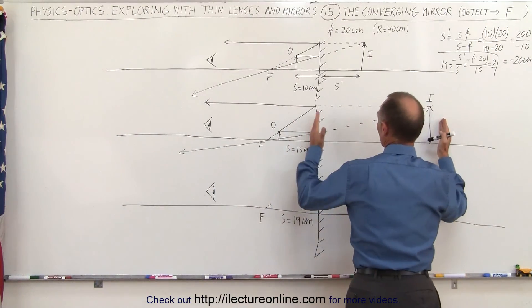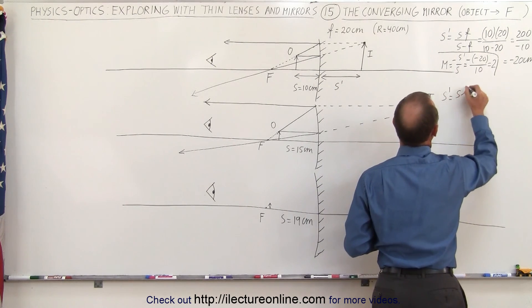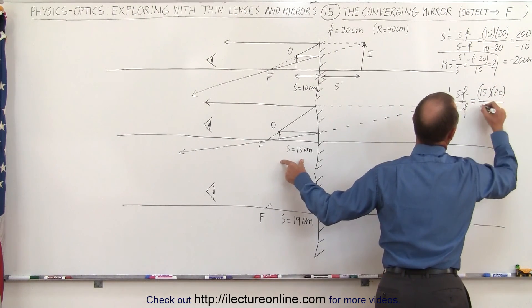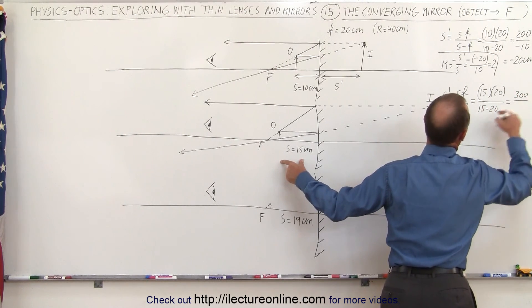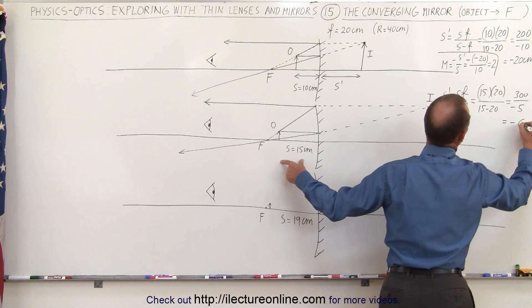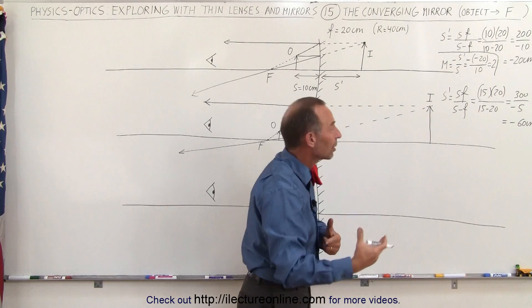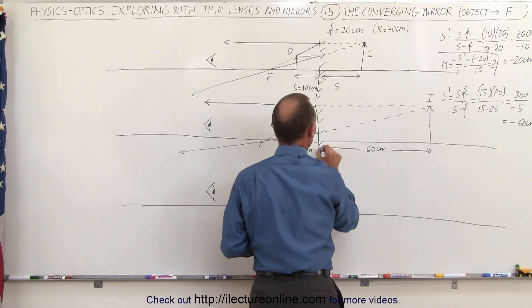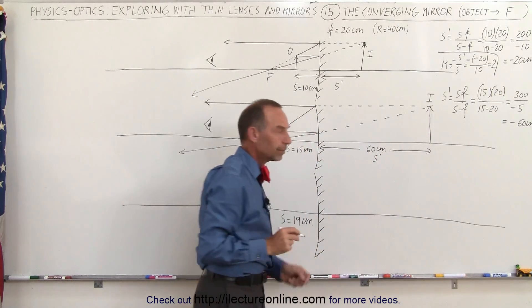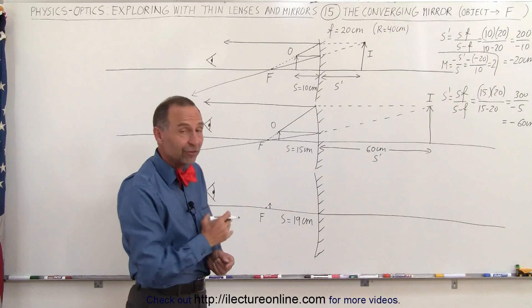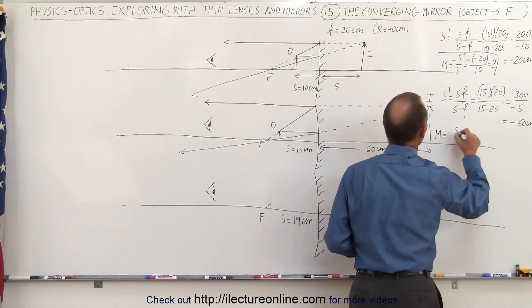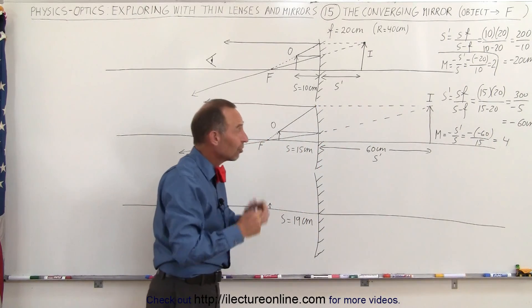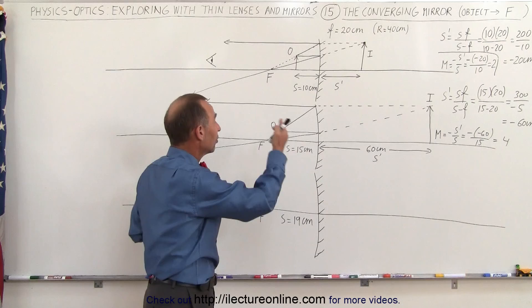The image distance is given by s prime equals sf over s minus f. In this case, s is 15 and f is 20, so we get 15 times 20 divided by 15 minus 20, which is 300 divided by minus 5, giving minus 60 centimeters. Minus means it's behind the mirror — 60 centimeters behind the mirror. The magnification is minus s prime over s, which is minus (minus 60) over 15, equaling positive 4. A positive 4 means the image is upright and 4 times as large as the original object.